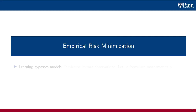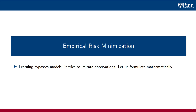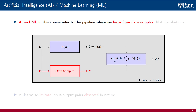We began with a definition of learning in terms of statistical risk minimization, but we have evolved into a definition in terms of empirical risk minimization. This is a form of learning that bypasses models by trying to imitate observations as opposed to imitating models. Henceforth we will use the term AI and ML to refer to the pipeline illustrated in this block diagram, where we learn from data samples — not distributions. The AI attempts to imitate input-output pairs we have observed in nature and incorporated into a training set.